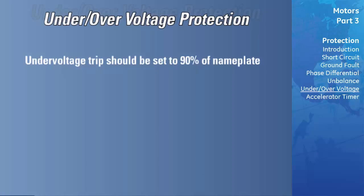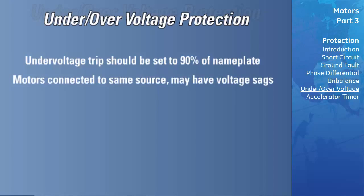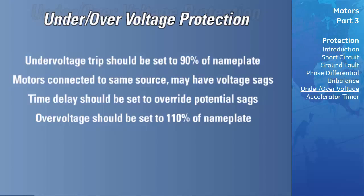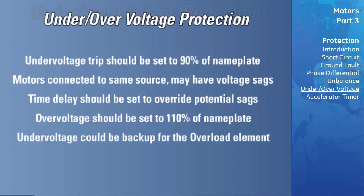The under voltage trip should be set to 90% of nameplate, unless otherwise stated on the data sheets. Motors connected to the same source may experience a temporary under voltage when one of the motors starts. To override these temporary sags, a time delay set point has been incorporated into the under voltage element. The over voltage element should be set to 110% of the motor's nameplate, unless otherwise stated. The under voltage element can be considered as backup protection for the overload element. If the voltage decreases, the current will increase, causing an overload trip. In some cases, if an under voltage condition exists, it may be desirable to trip the motor faster than the overload element.